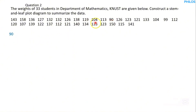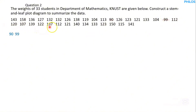Starting with the 90s: we have 90 — mark and write it down. We also have 99 — mark and write it down. That's all for the 90s. For the 100s: we have 104, another 104, and 107 — mark each and write them down. That's all three values in the 100s.